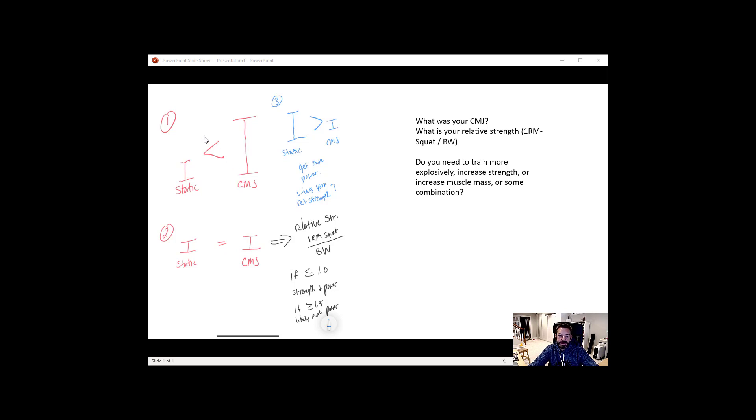Now if in scenario one the counter movement is bigger than the static that should make sense for most people because you're using elastic energy and not cheating, but that's why counter movement jumps are more explosive because you use elastic energy and you're using the stretch reflex. But many people said that because their counter movement jump was bigger than their static jump they need to train more explosively, and it depends, and we'll come back to that.